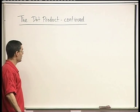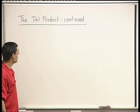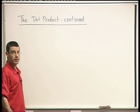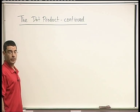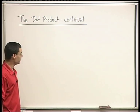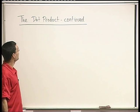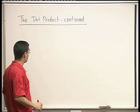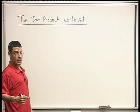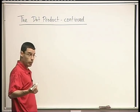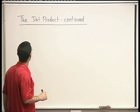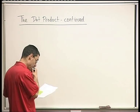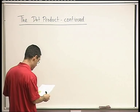Now that we're acquainted with the dot product, the next step is to see how the dot product looks in coordinates. We try to express vectors in components using the Cartesian coordinate system, and that's what we want to do now.